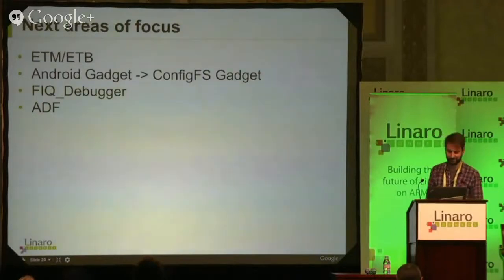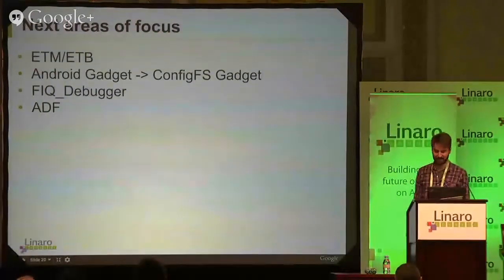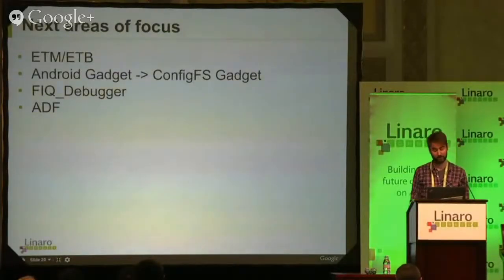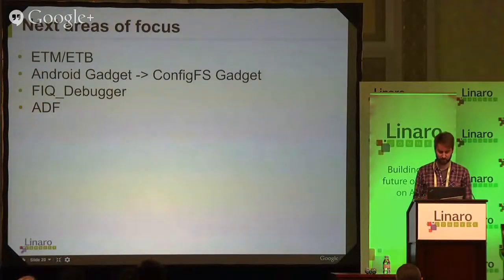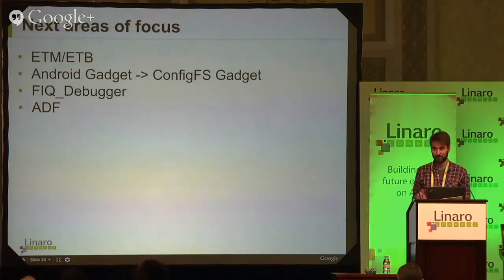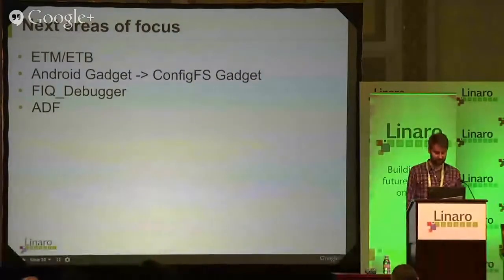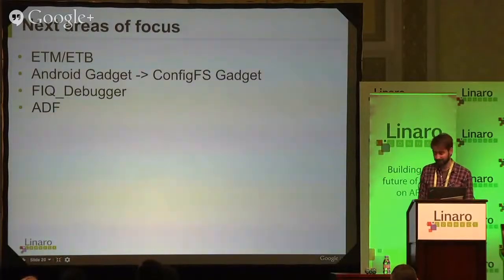Given that set of outstanding big items, these are the next areas of focus: the ETM and ETB, which Matthew has been starting research on; the Android gadget to ConfigFS gadget driver change, where a good chunk of the functionality is already upstream and may just need a little user space work, though there may be a need to look into specific functions the Android gadget provides to ensure similar user space equivalents exist; the FIQ debugger, which Daniel is going to be digging into; and ADF, which we don't have current plans for but we've been working with the graphics team to start chipping away at it.